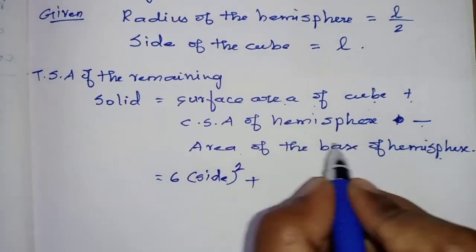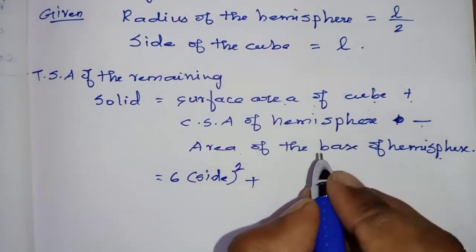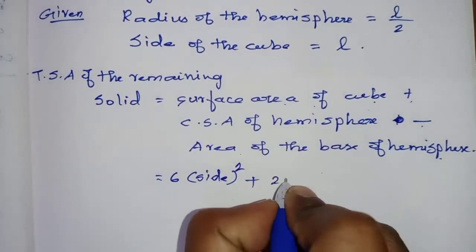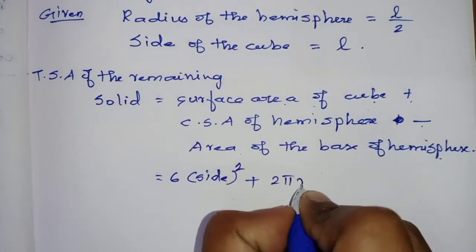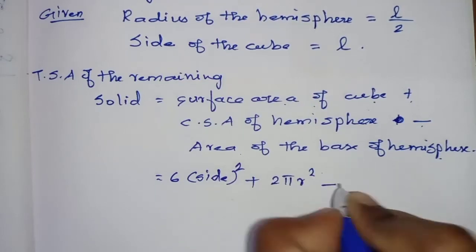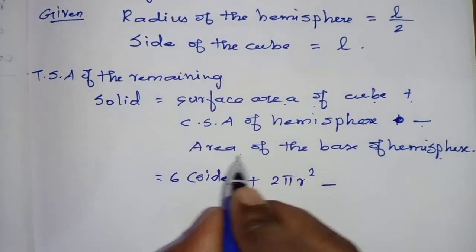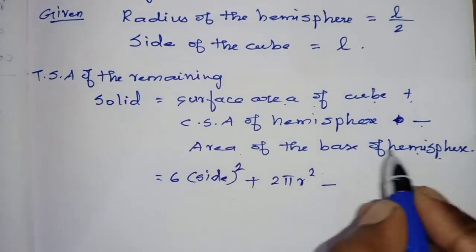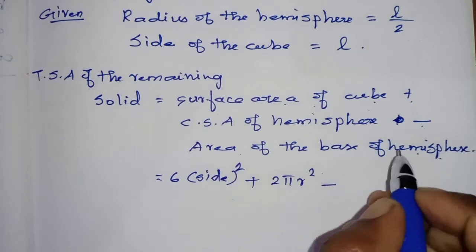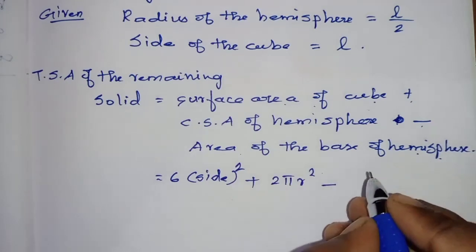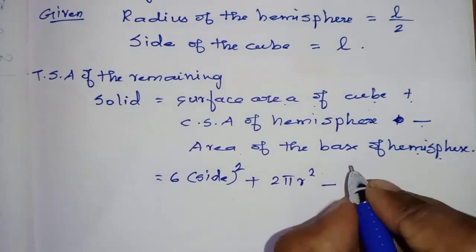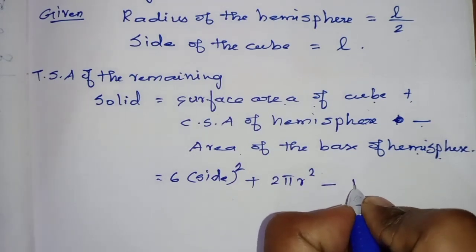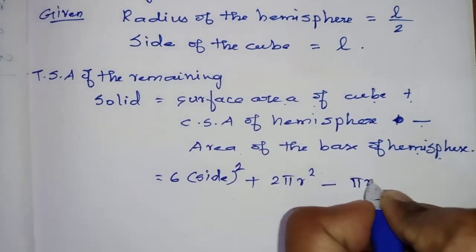The surface area formula is: 6 times side squared for the cube, plus 2πr² for the CSA of the hemispherical block, minus πr² for the area of the circular base. This simplifies to 6 times side squared plus 2πr² minus πr².